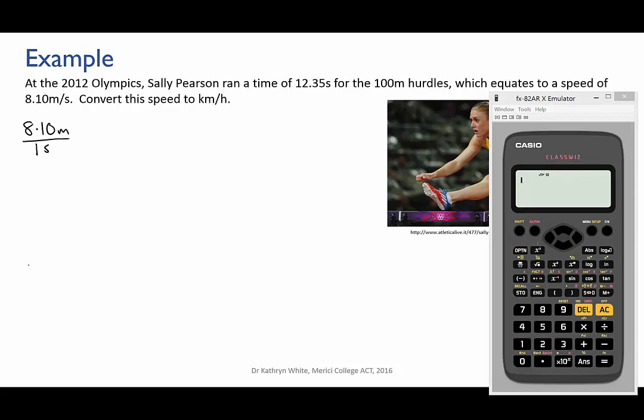First, write what you know with the compound unit arranged appropriately. Meters on the top, per means divided by seconds on the bottom. Now we need to convert the meters into kilometers and the seconds into hours. Now don't fret about this being difficult, it's not. We just treat the two conversions separately.